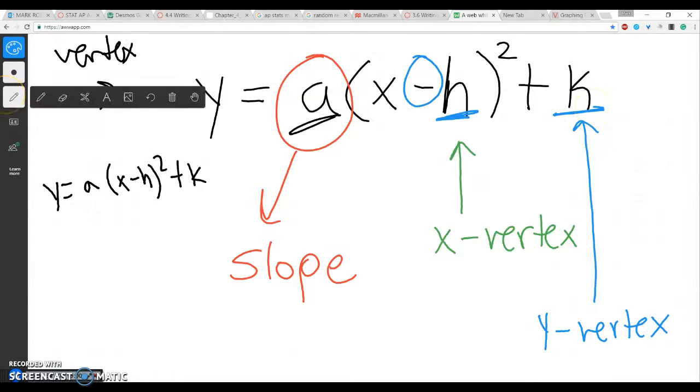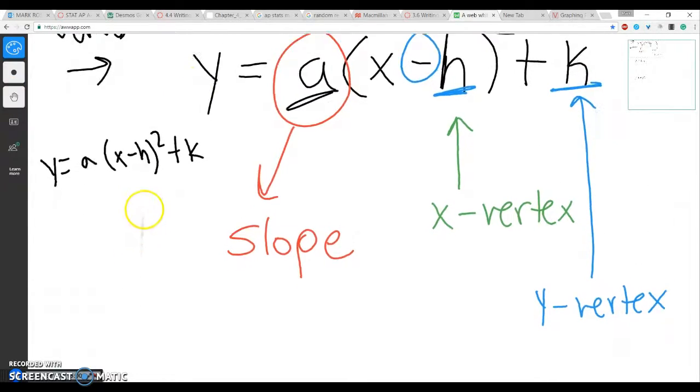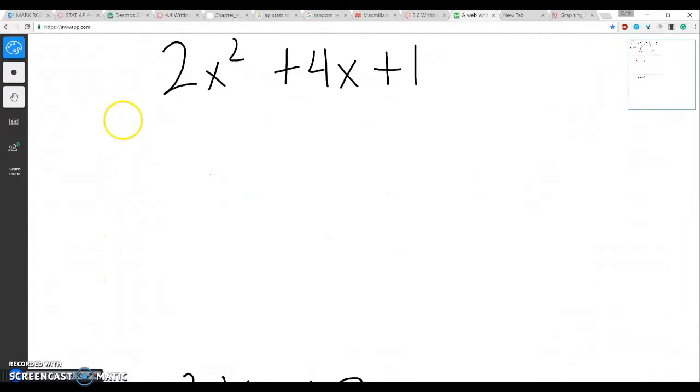Let's see how this kind of works for a problem. So for this first one, I'm going to kind of just try to write out generally what happens. So you get y equals, in this case my a is my slope, so I'm going to write 2. Then I'm going to have parentheses, x minus.